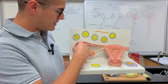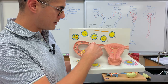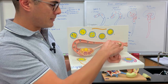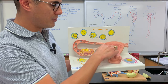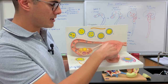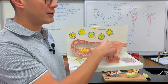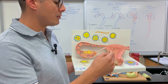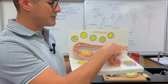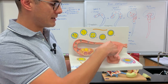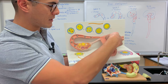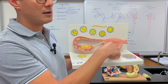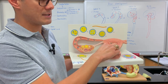So mitosis is occurring here. And then what will happen is here within the uterus, the blastula will undergo a process known as implantation — whenever this blastula gets implanted within the endometrium of the uterus.